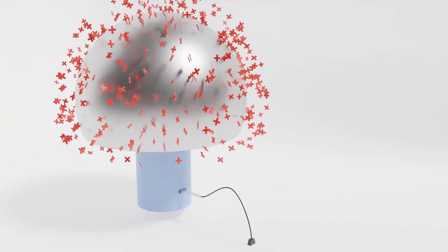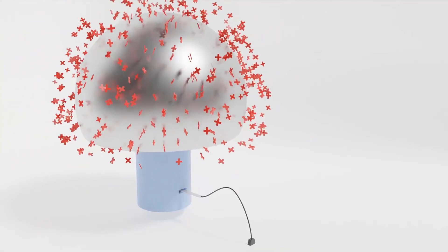With the help of Van de Graaff Generator, you can produce 6 to 8 million volts with respect to ground.